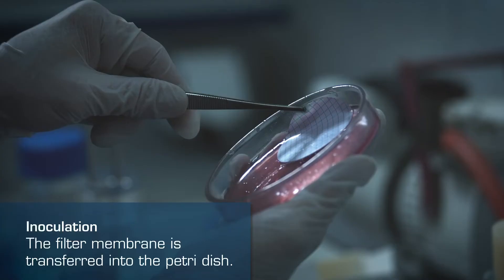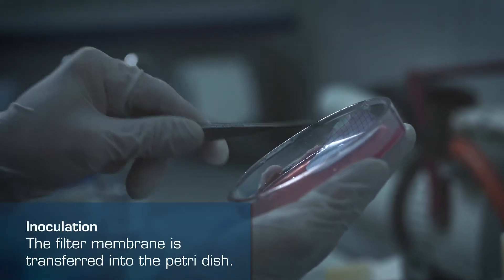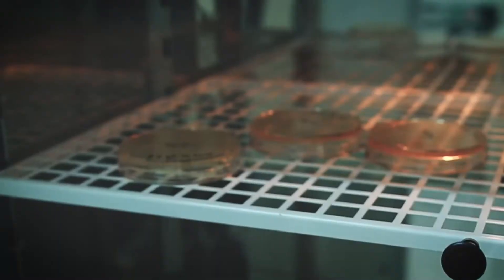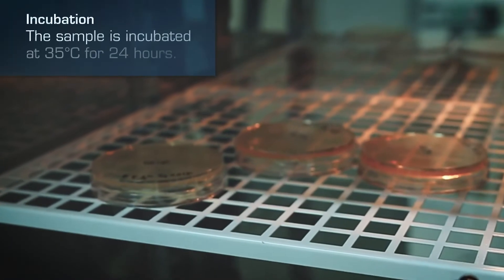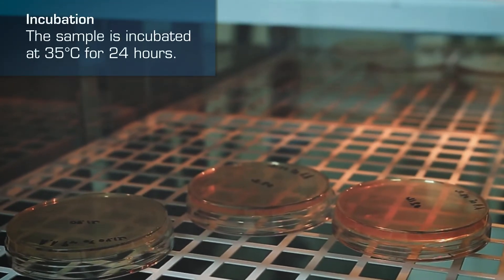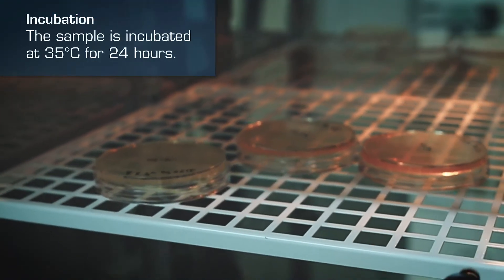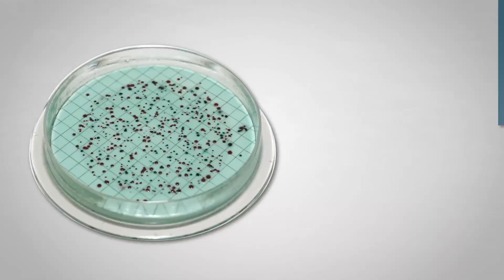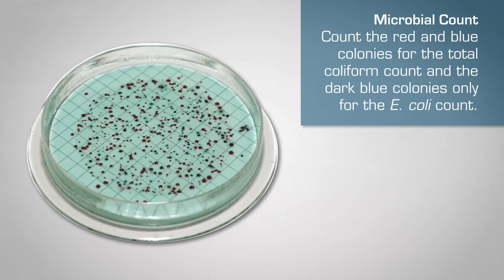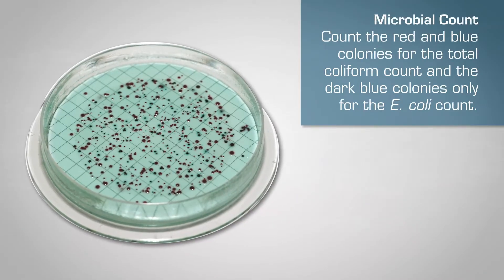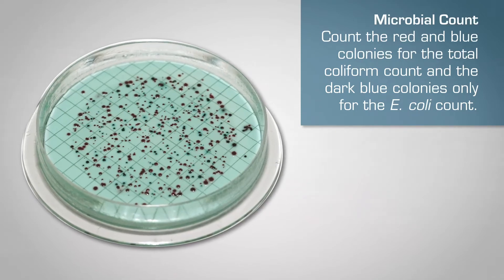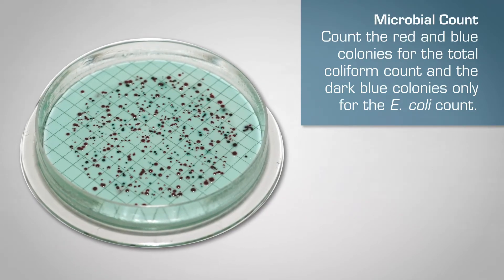Inoculation: the filter membrane is transferred into the petri dish. Incubation: the sample is incubated at 35 degrees Celsius for 24 hours. Microbial count: count the red and blue colonies for the total coliform count, and the dark blue colonies only for the E. coli count.